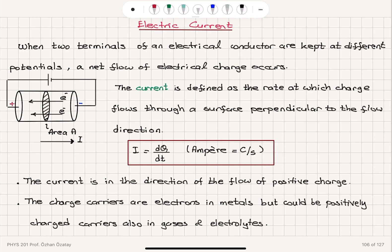To summarize: electric current is obtained when an electrical conductor has its two sides kept at different potentials. Electrons flow from the negative terminal toward the positive terminal, creating a current defined as the rate of charge flow, dq/dt, measured in amperes. The current flows through a perpendicular surface — a circle for a cylindrical conductor. Current is in the direction of positive charge flow, so electrons go from right to left while current flows from left to right. Charge carriers are electrons in metals, but can be positively charged carriers in gases and electrolytes.